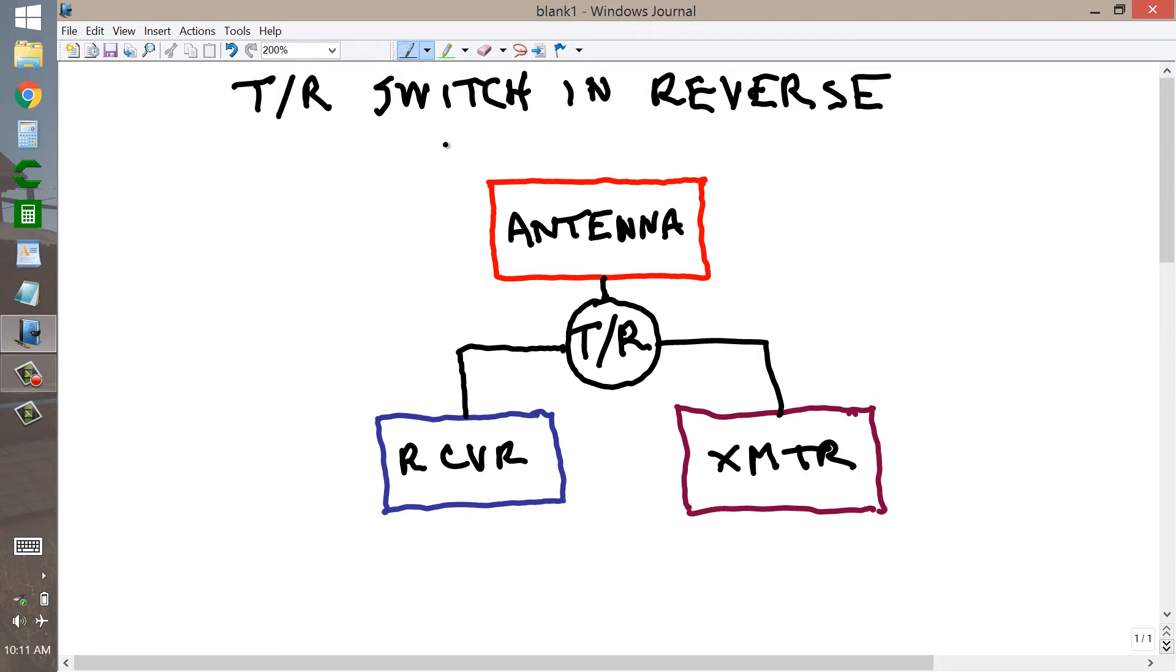In my case, the receiver was a Drake R4A and the transmitter was a Drake T4X. And the antenna could have been any number of things. I think that usually it was either a dipole or a vertical antenna.